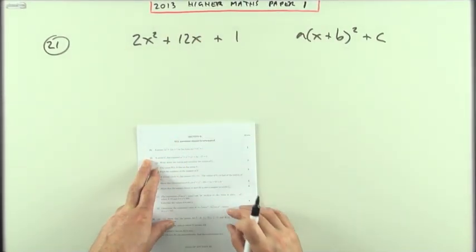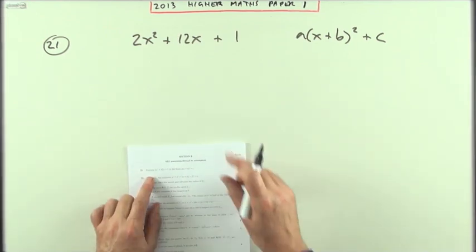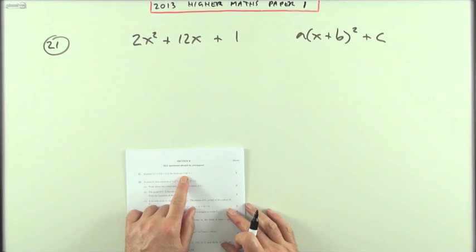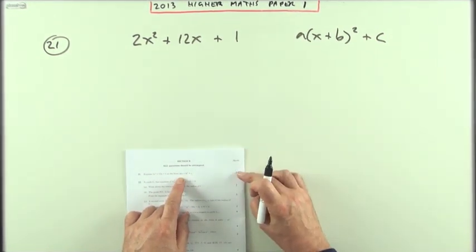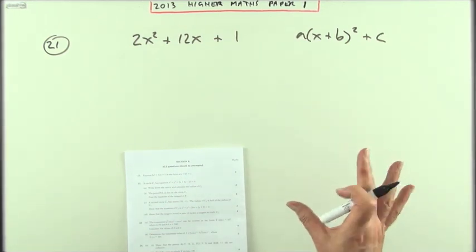Number 21 from the 2013 Higher Maths Paper 1 - just a short question for three marks. Complete the square, express this in this form. I'm just assuming here that we don't have to go on afterwards because it's only three marks and say a equals, b equals, c equals, but I'd be tempted to do that just in case.